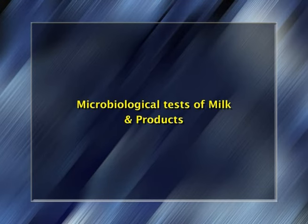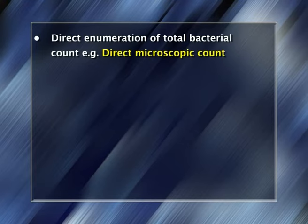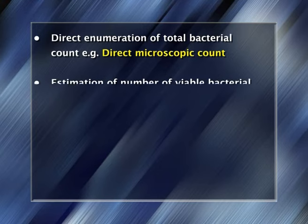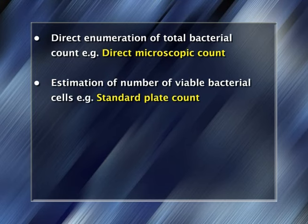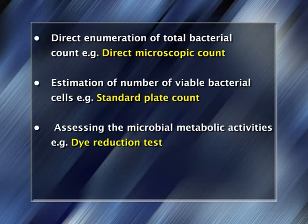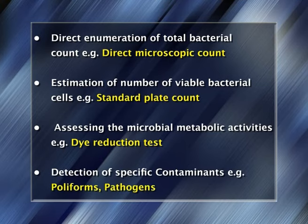Various microbiological tests in the dairy industry are broadly categorized into four groups: direct enumeration of total bacterial count (Direct Microscopic Count); estimation of viable bacterial cells (Standard Plate Count); assessing microbial metabolic activities (Dye Reduction Test); and detection of specific contaminants such as coliforms and pathogens.